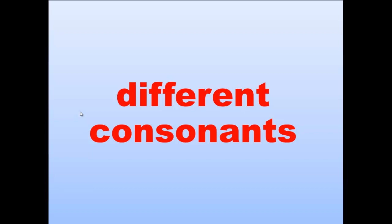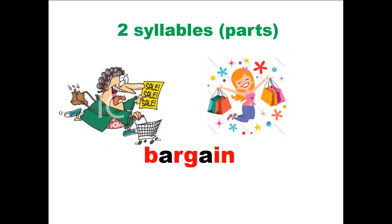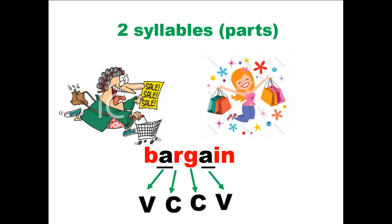Words with different consonants in the middle. The first word is bargain. What is a bargain? It is something at a lower price than its true value or real cost — when something is sold at a cost much lower than its actual price. Here are the two vowel sounds. The pattern is: first vowel sound, consonant, consonant, and another vowel sound. So this word follows the VCCV pattern and should be divided between the consonants, which are different consonants.